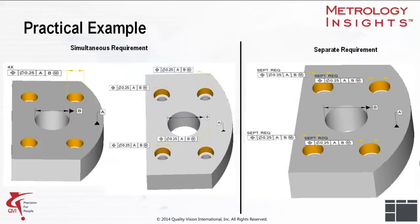Let's look further into the differences between simultaneous and separate requirements by comparing the two tolerances in this example. On the left, we see that simultaneity applies to the four feature control frames because datums A and B are referenced in the same order with the same modifiers. These four feature control frames are equivalent to a single feature control frame tolerancing the four holes as a pattern, which can also be seen on the left.